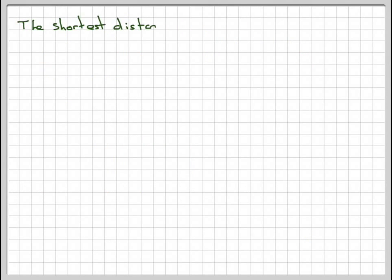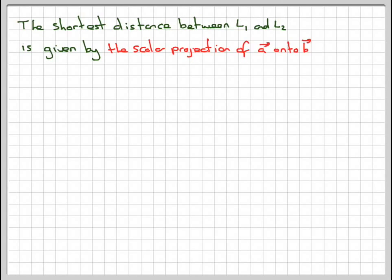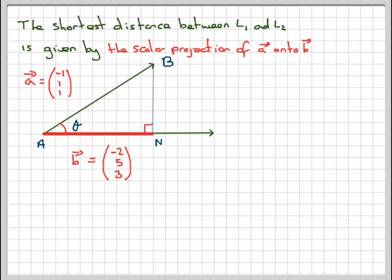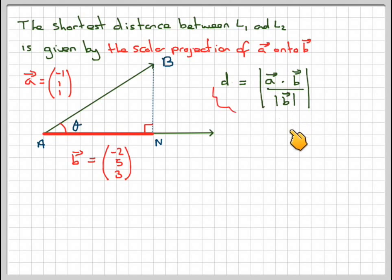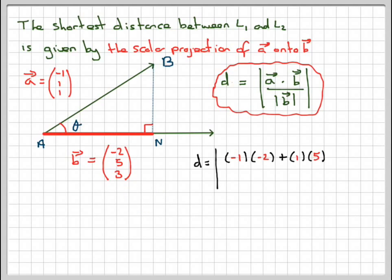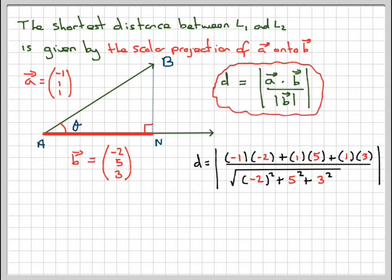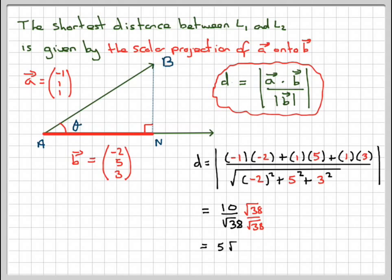The shortest distance between L1 and L2 is given by the scalar projection of A onto B, where A is (minus 1, 1, 1) and B is (minus 2, 5, 3). The distance is A dot B over the magnitude of B. Doing the scalar product: minus 1 times minus 2 plus 1 times 5 plus 1 times 3, over the square root of minus 2 squared plus 5 squared plus 3 squared. This gives 10 on the top and 4 plus 25 plus 9 equals 38 under the root. So we get 10 over root 38, which simplifies to 5 root 38 over 19, approximately 1.62.